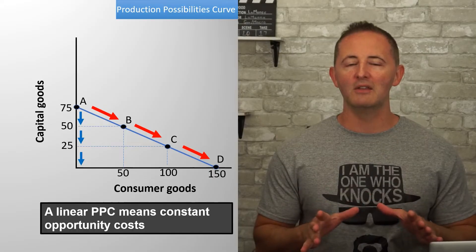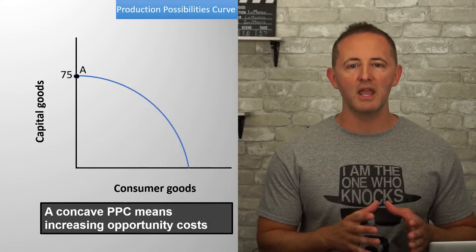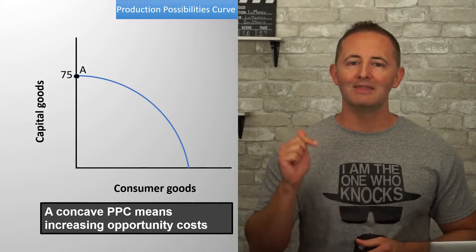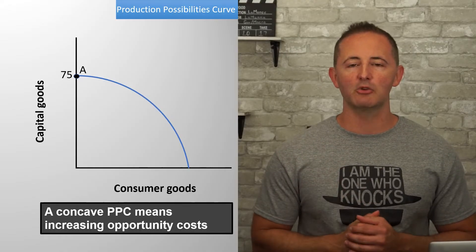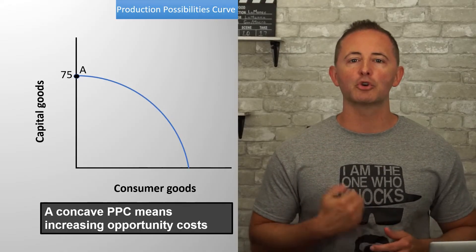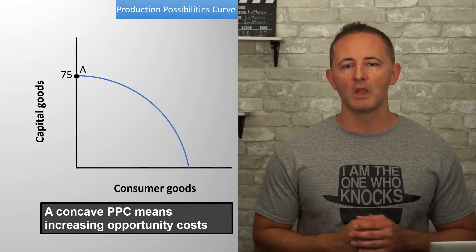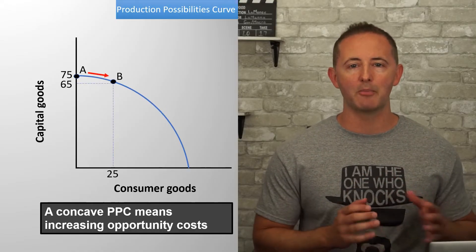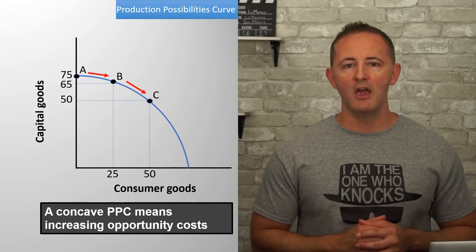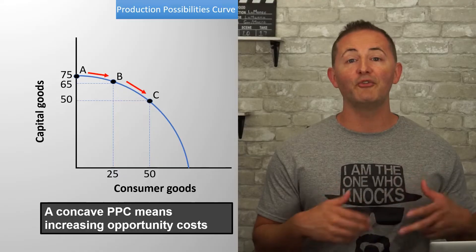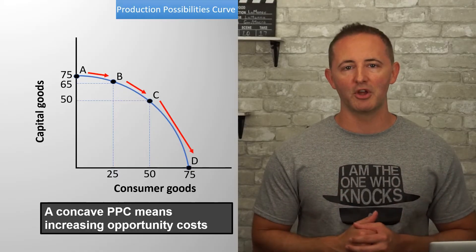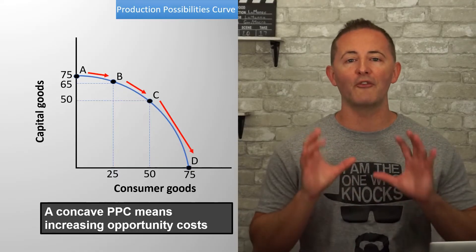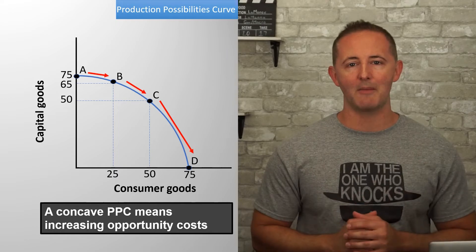Notice what happens on our concave, or bowed outward, PPC. This PPC represents increasing opportunity costs. From A to B, the opportunity cost is 10 capital goods. From B to C, it's 15 capital goods. And if we go from C to D, it's even higher — 50 capital goods.